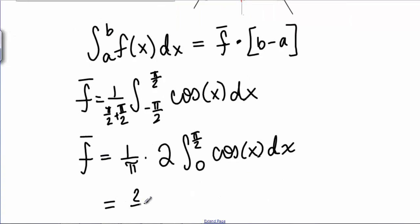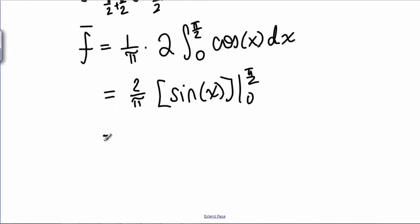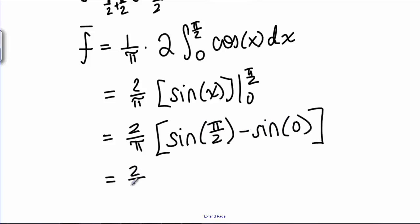And that gives us 2 over pi, the anti-derivative of cosine, which is sine, evaluated from 0 to pi over 2. So that gives us 2 over pi, sine of pi over 2, minus sine of 0, which gives us 2 over pi, 1 minus 0.